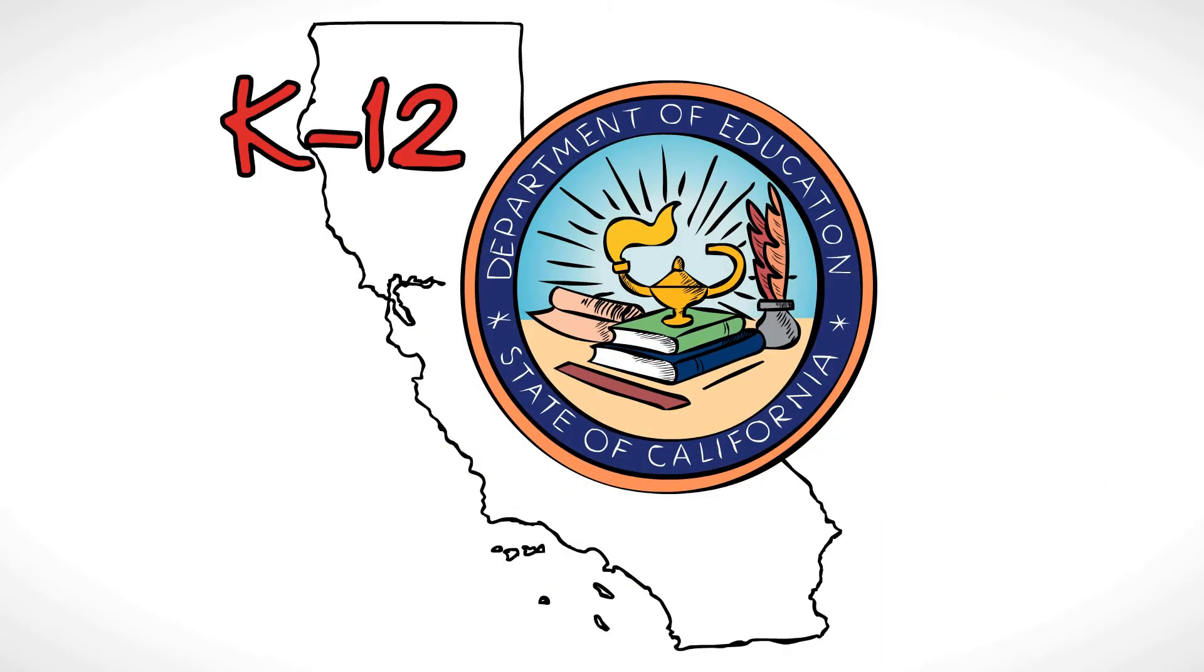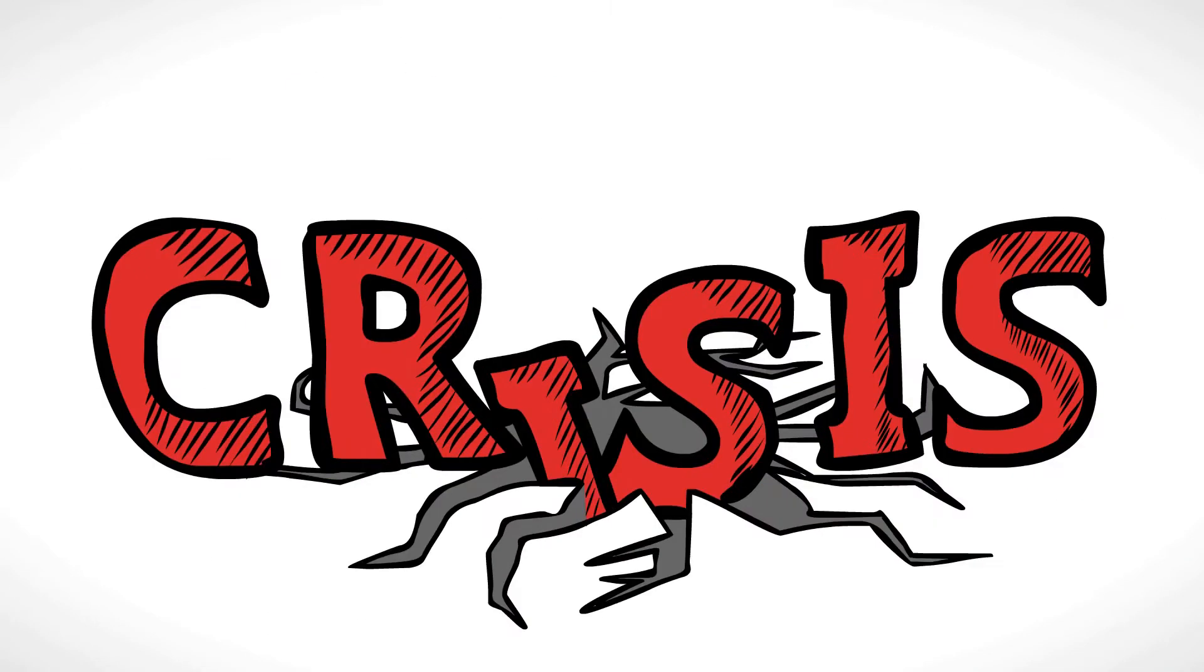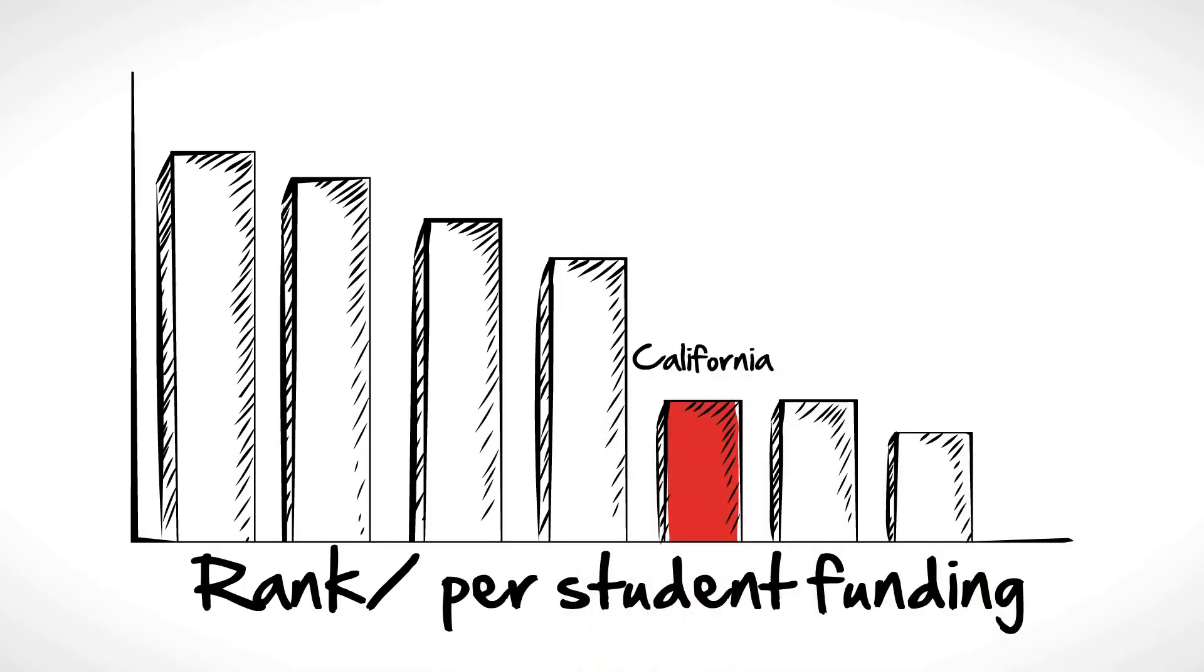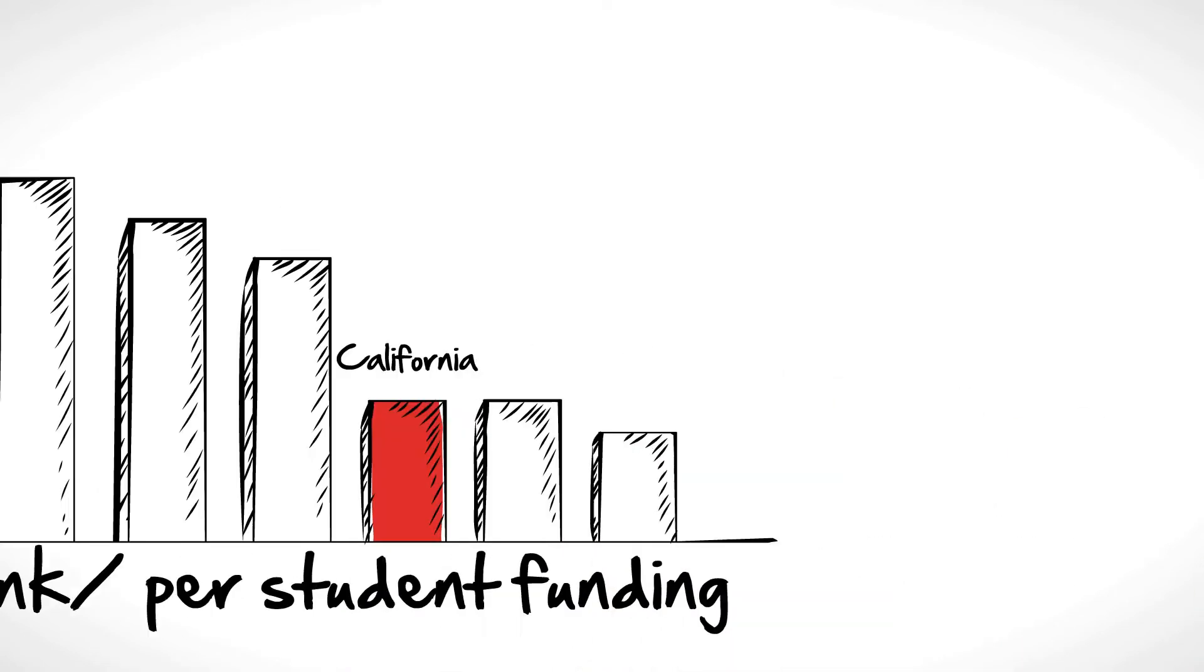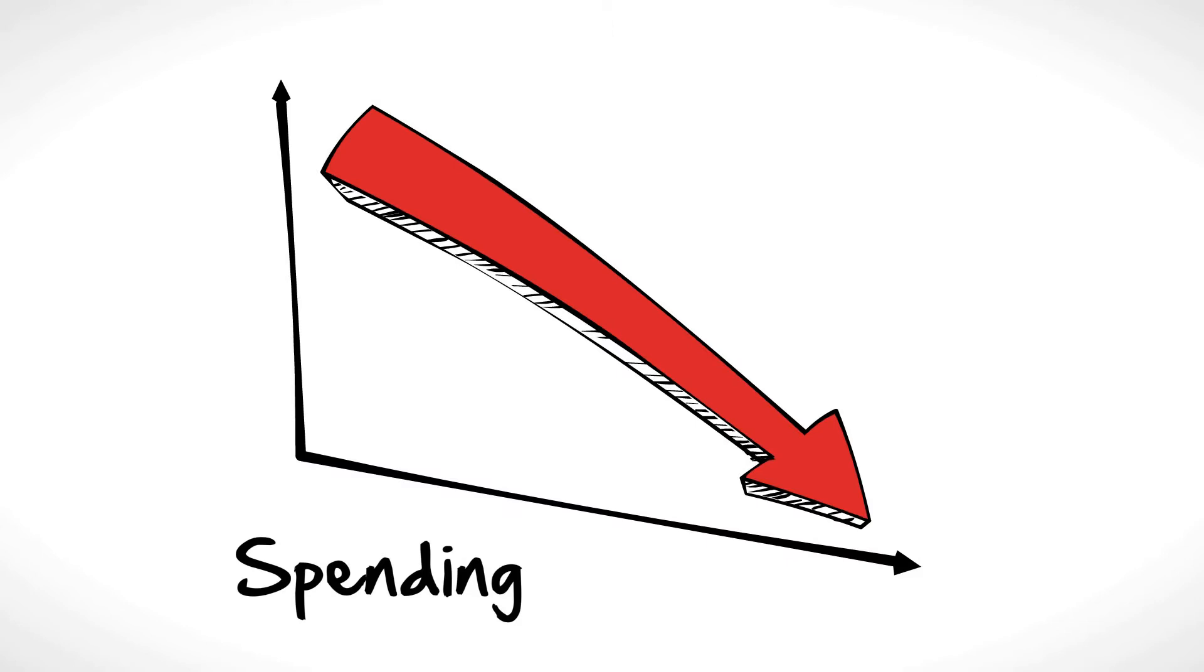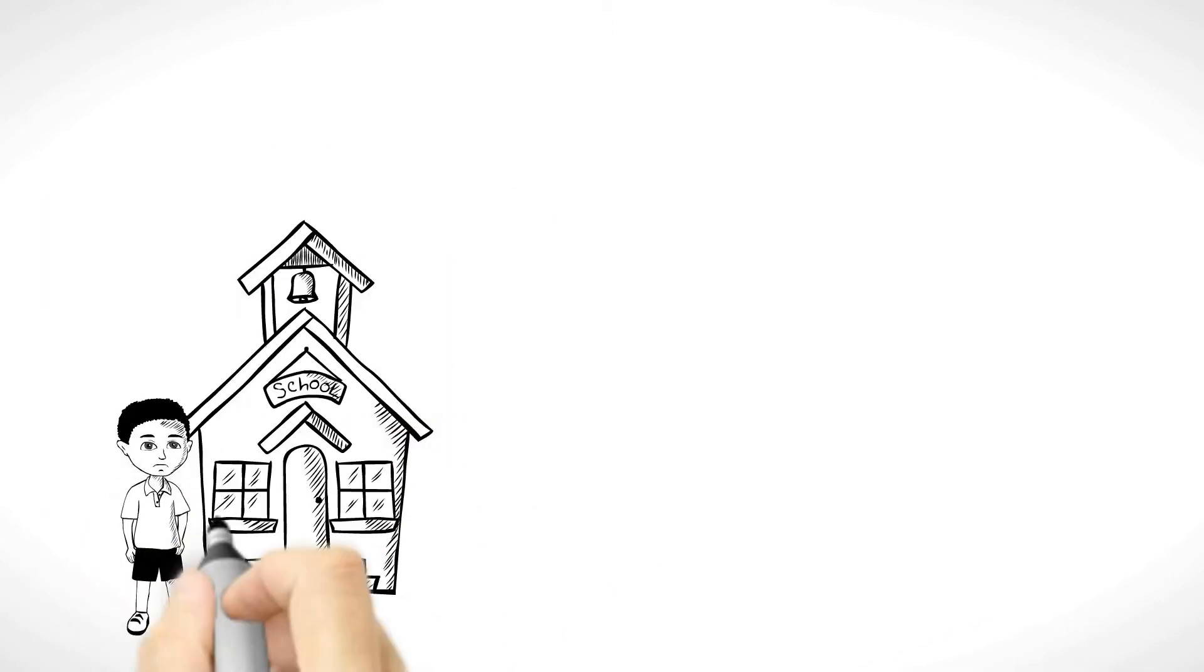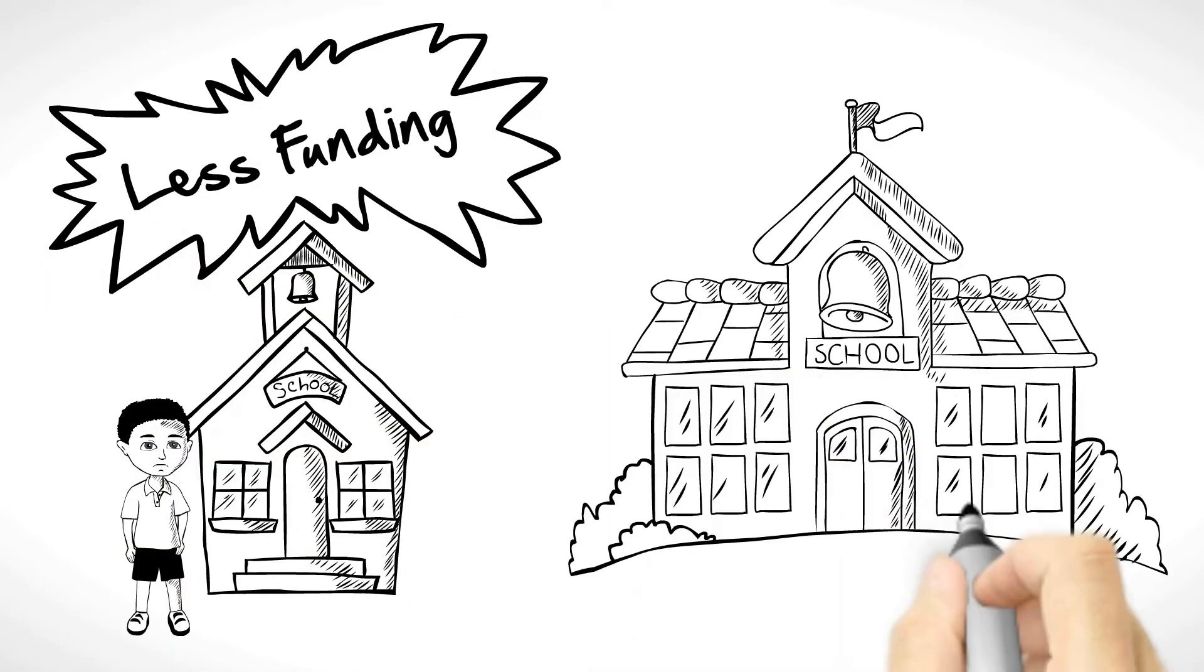K-12 education in California is in crisis. Not only does California rank near the bottom in per-student funding, and spending has been drastically cut, but students in low-income schools receive less funding than kids in well-to-do neighborhoods.